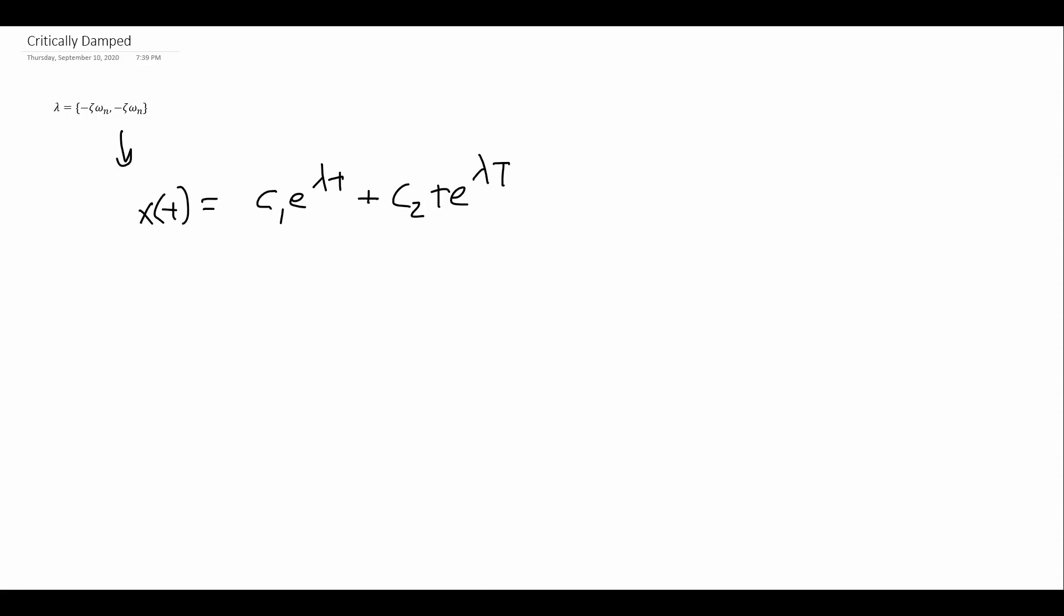For the specific case, I'll put in our value of lambdas so we can see what it looks like. x(t) = c₁e^(-ζωₙt) + c₂te^(-ζωₙt). So we need to find c₁ and c₂, and again, we're going to do that using our initial conditions.